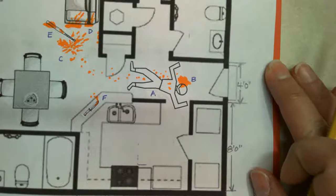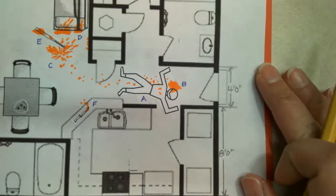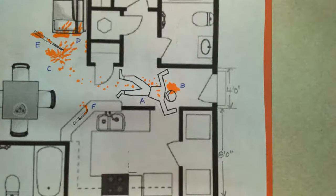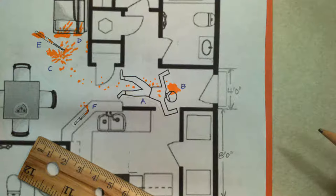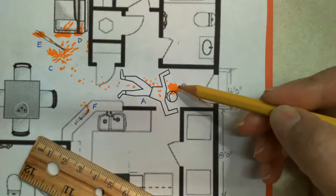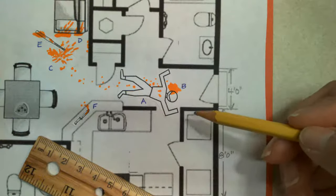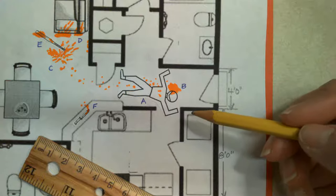Okay, so I've zoomed in a little bit to show you how to do the measurements for the evidence. I'm going to just choose something to start with. I'm going to use maybe this blood pool that's labeled letter B as my first piece of evidence that needs its measurements.